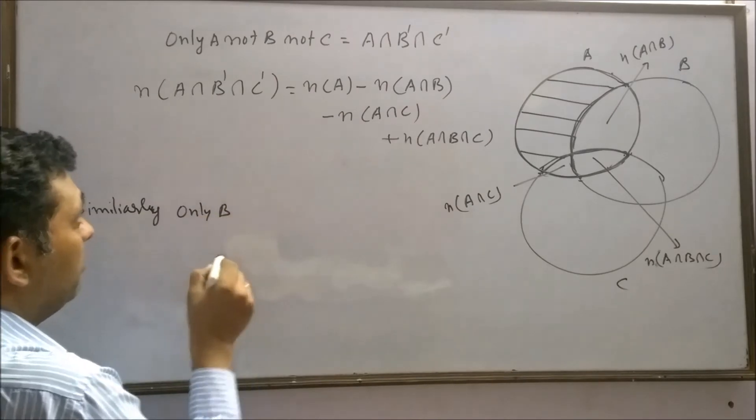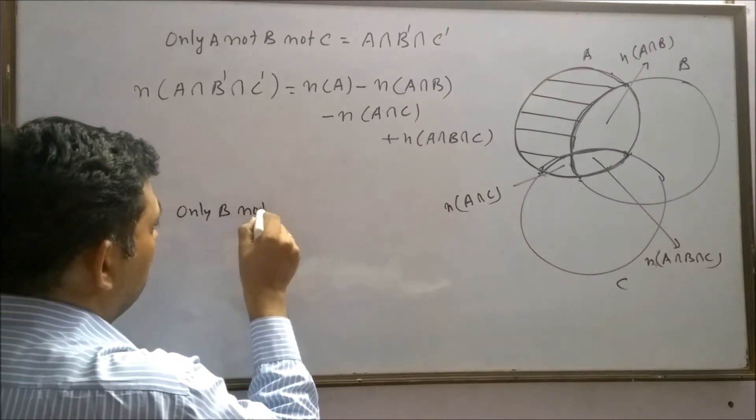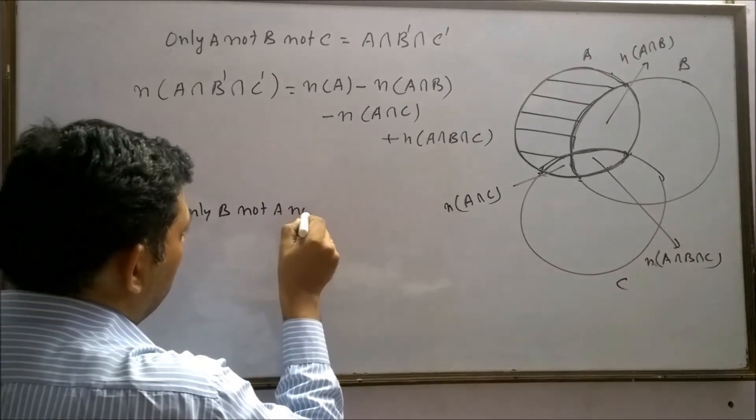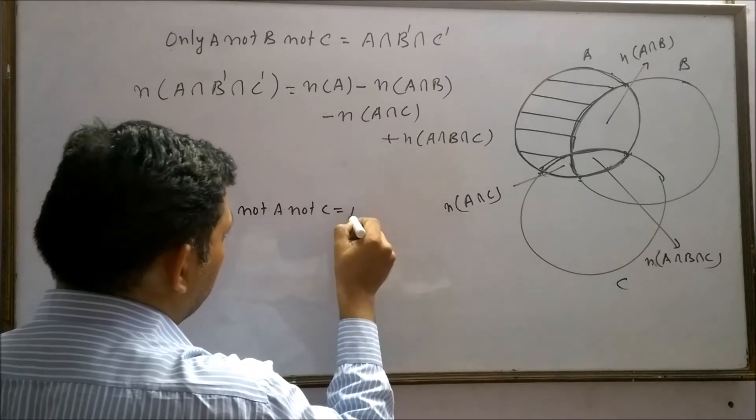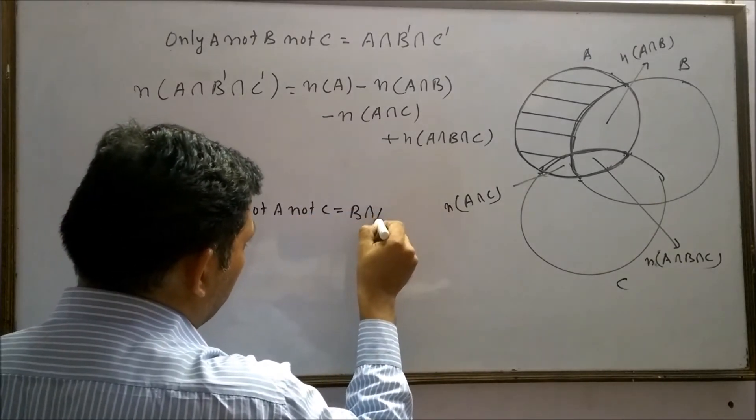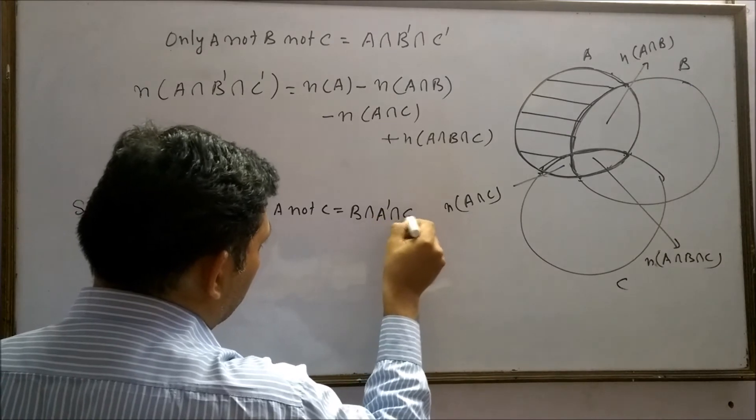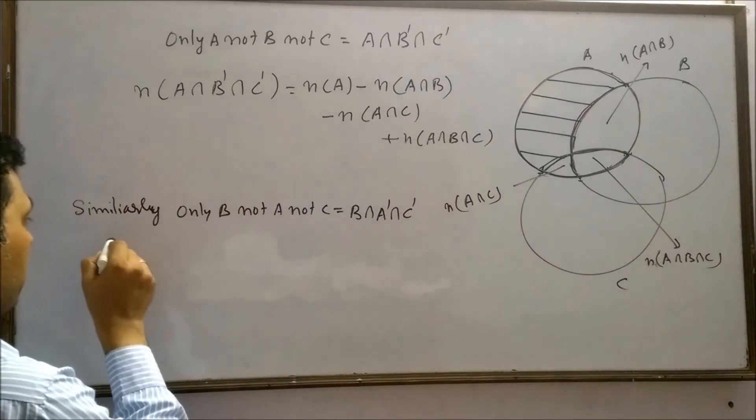Similarly, only B, not A, not C, can be written as B intersection A complement intersection C complement, which will be equals to